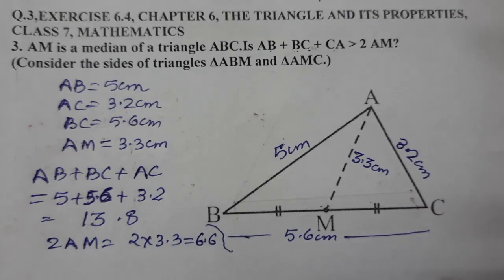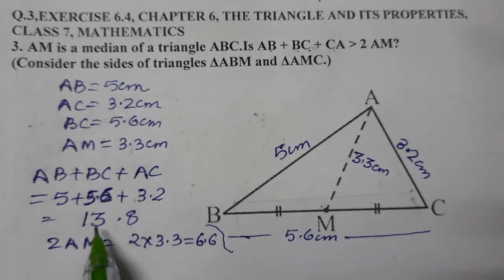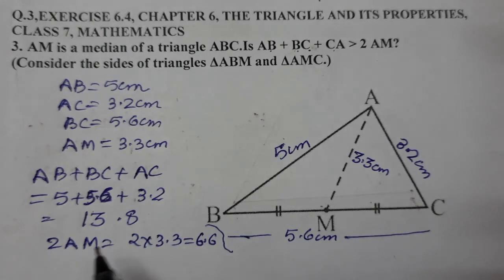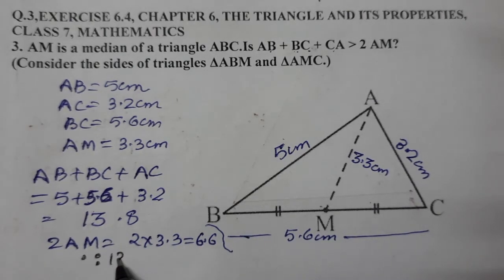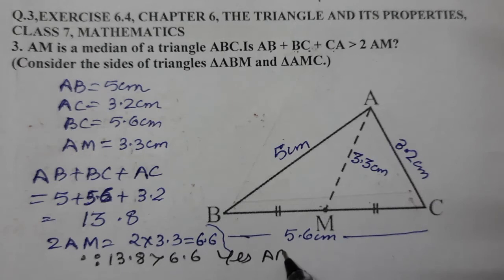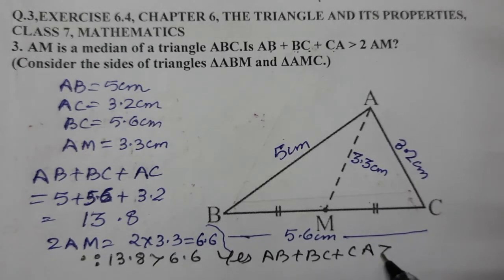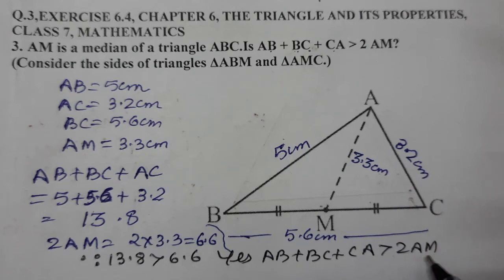And of course, yes, 13.8 is greater than 6.6. So we will write: yes, AB plus BC plus CA is greater than 2 times AM.